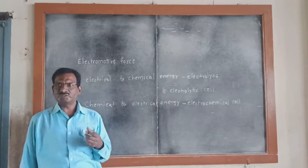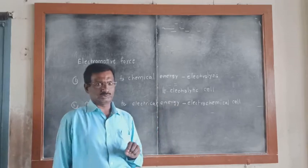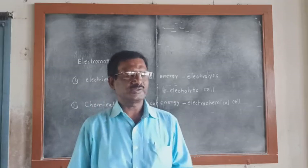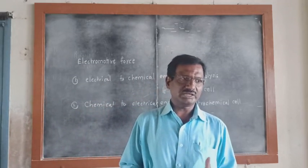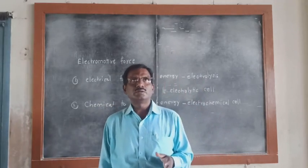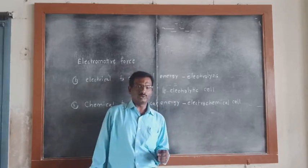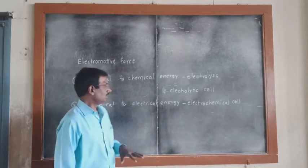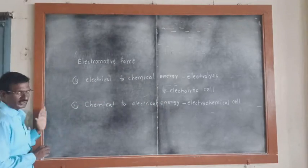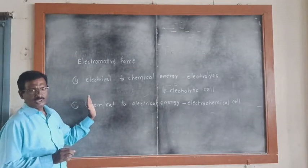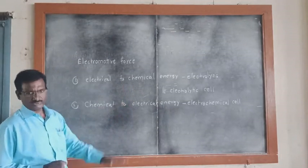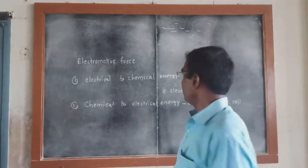Now first of all we have to discuss about types of electrodes. There are around five types of electrodes. One is metal-metal electrode. Second one is amalgam electrode. Third one is metal insoluble salt electrode. Fourth one is gas electrode. And fifth one is redox electrode or oxidation-reduction electrode. We have to discuss them one by one.